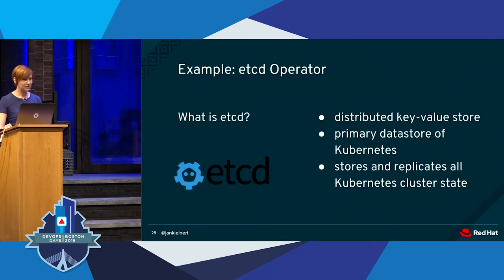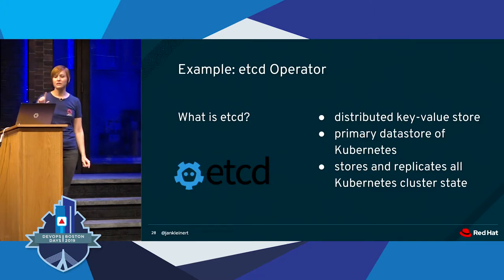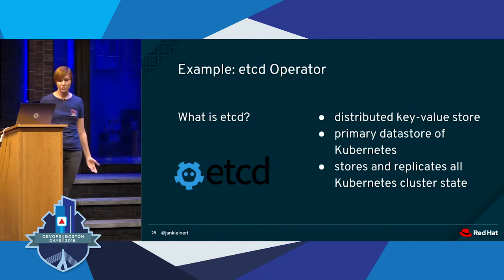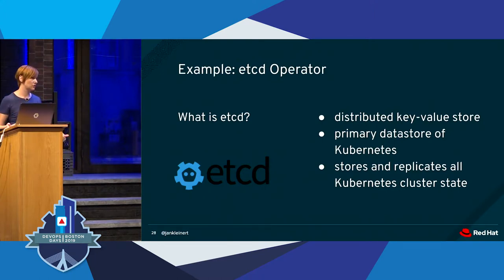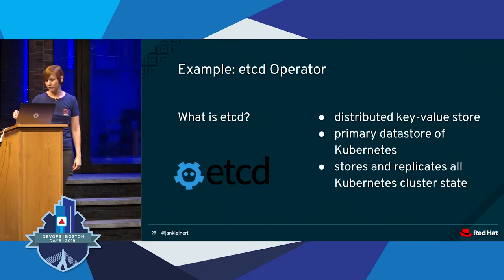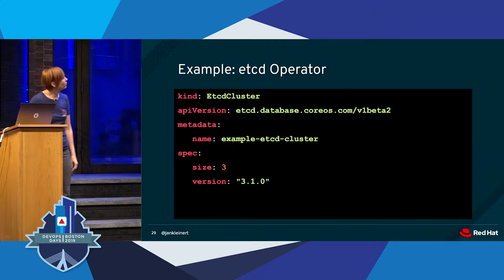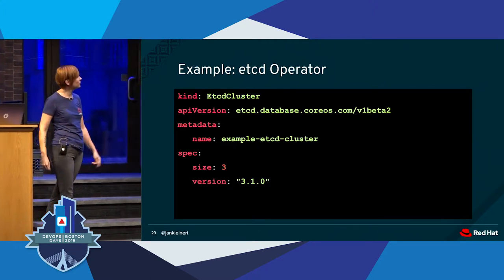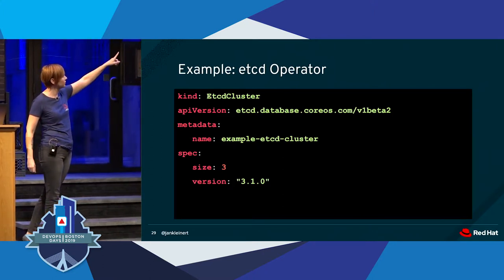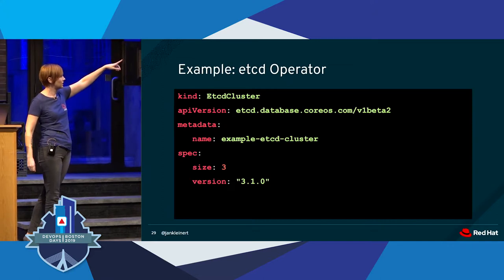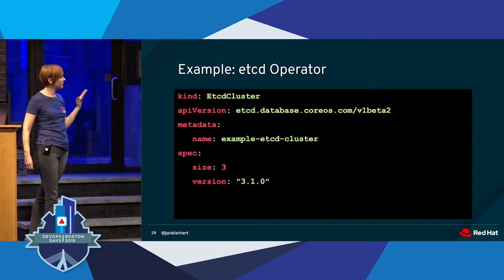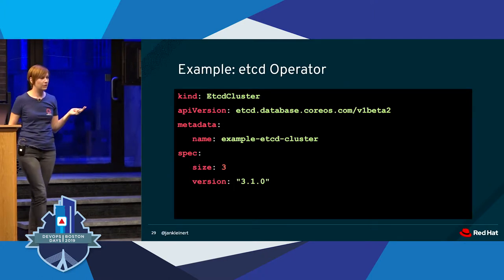Let's look at a simple example: the etcd operator. If you're not familiar, etcd is a distributed key-value store that Kubernetes uses for storing cluster state. Here's an example of what our custom resource might look like for an etcd cluster—the kind is EtcdCluster, and the spec says we want it to be size 3 and running version 3.1.0.